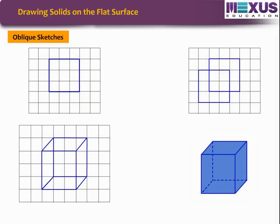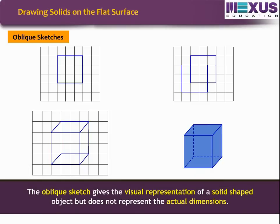Here is a cube. When we look at the cube, not all the lines forming the cube are of equal length. Also, we are unable to see all the faces of the cube. In spite of this illusion, we can make out that the image is of a cube. Such skeletons of solids are called oblique sketches. They can be drawn using squared paper. The oblique sketches give the visual representation of a solid-shaped object but do not represent the actual dimensions.